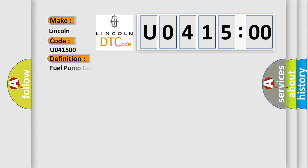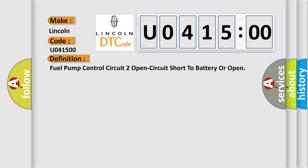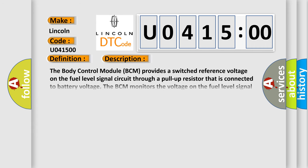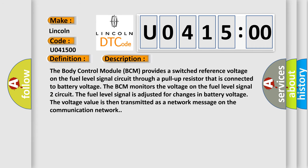The basic definition is: Fuel pump control circuit — open circuit, short to battery, or open. The body control module (BCM) provides a switched reference voltage on the fuel level signal circuit through a pull-up resistor connected to battery voltage. The BCM monitors the voltage on the fuel level signal 2 circuit. The fuel level signal is adjusted for changes in battery voltage, and the voltage value is then transmitted as a network message on the communication network. This diagnostic error occurs most often in the following cases.